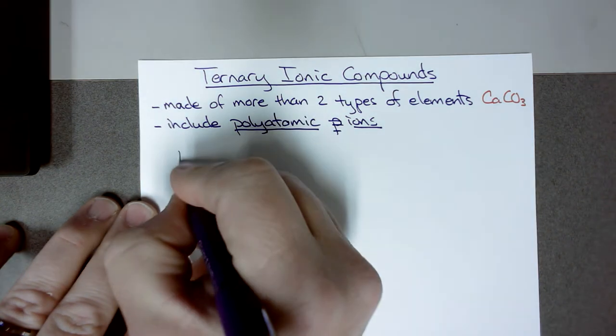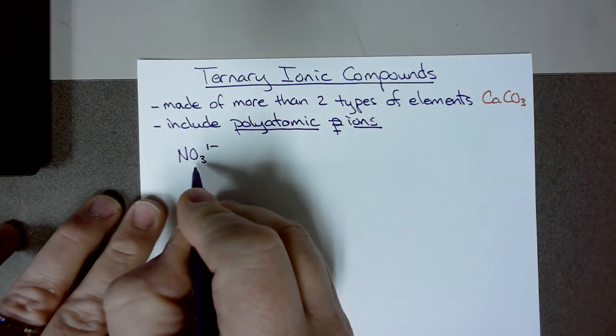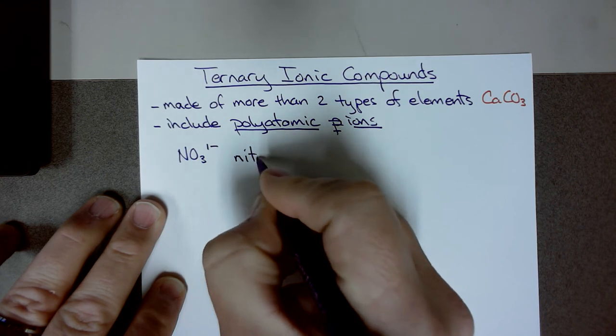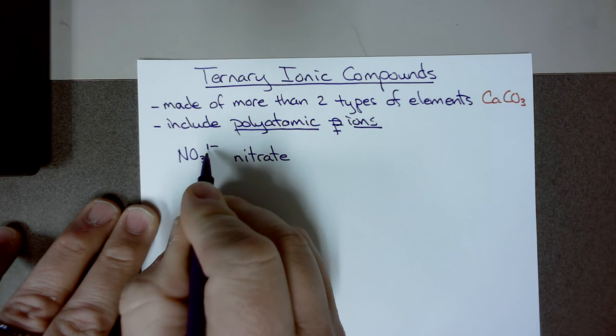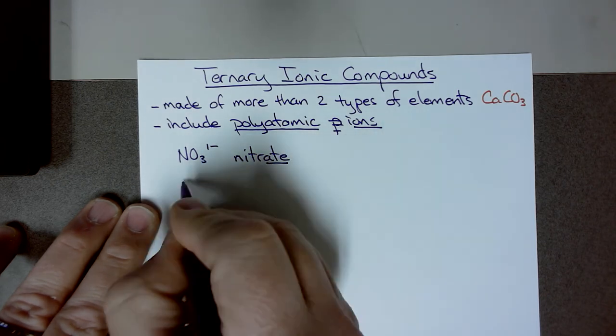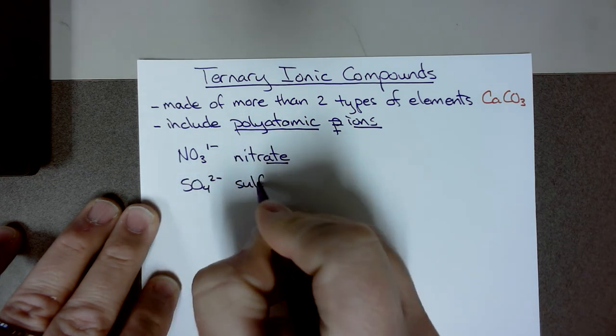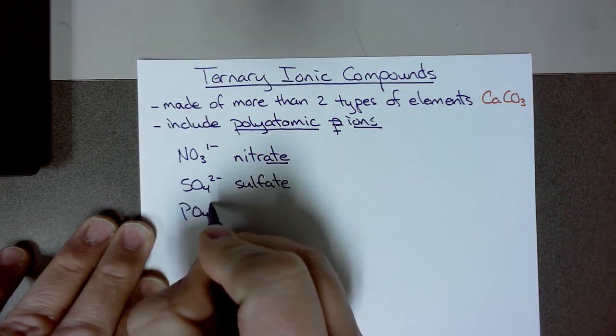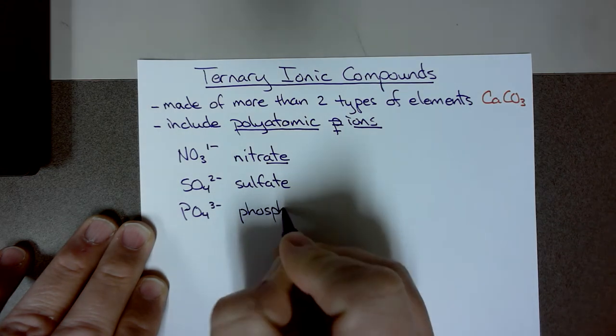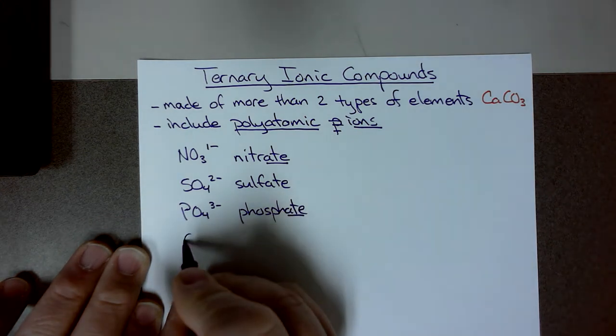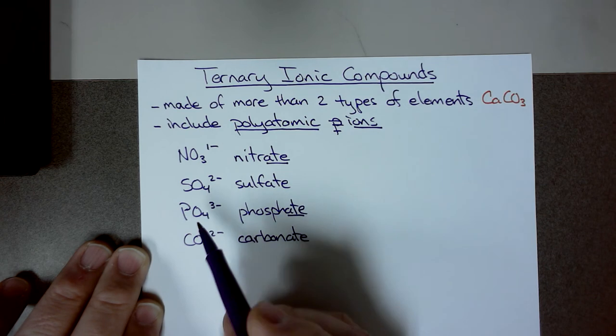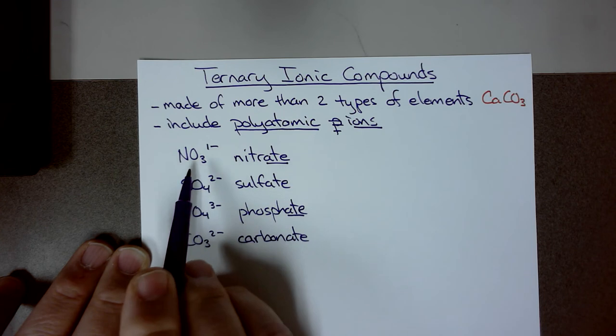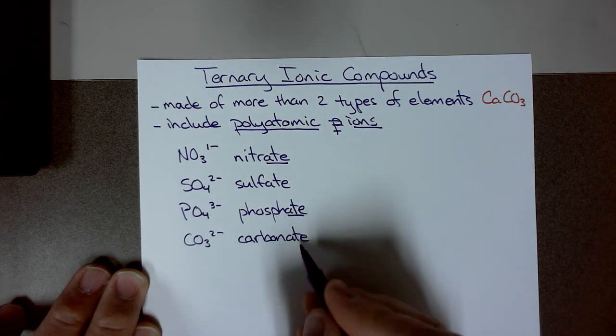Let's start out. First we'll have NO3 1 minus, that's a nitrate. It has to exist as a single unit. You cannot break it apart. That NO3 cannot be separated from each other. This is a covalently bonded molecule that has a charge. Then we have SO4 2 minus, that'd be sulfate. Then we have PO4 3 minus, this would be phosphate. You notice that they end in -ate. We have CO3 2 minus, this is carbonate. These are oxyanions and the reason we call them oxyanions is that they are polyatomic anions that include several oxygen atoms in them.